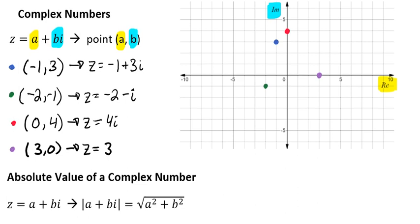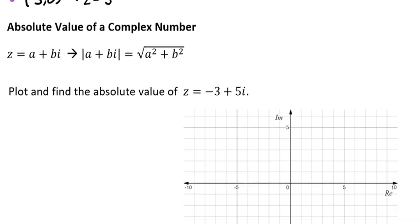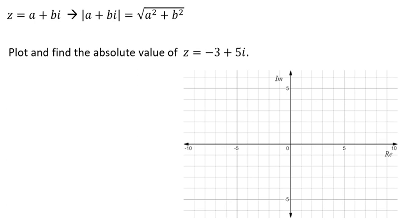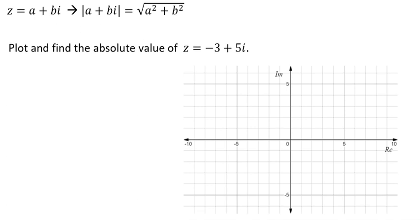So let's go ahead and let's do an example. So here, we're going to plot and find the absolute value of z equals negative 3 plus 5i. As an ordered pair, that means that we would be plotting negative 3, comma 5. So we'll go ahead and we'll plot that. So we have negative 3 on the real and then up to 5 on our imaginaries. So this is going to be our point right here.